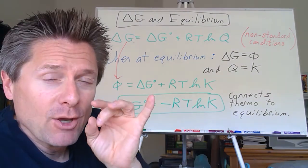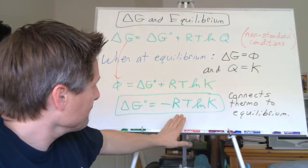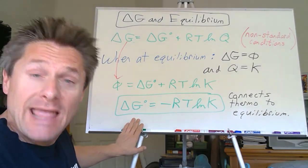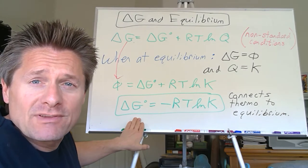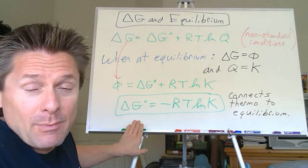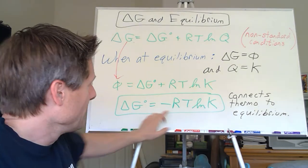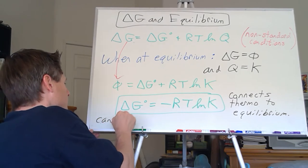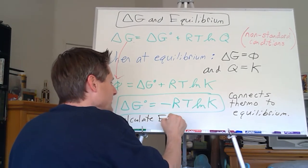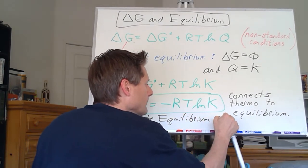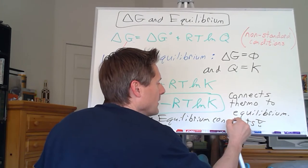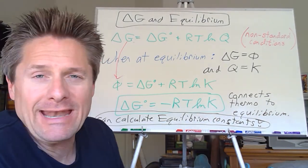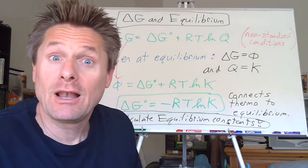One of the most common things for this type of problem is to calculate equilibrium constant values theoretically from thermodynamic tables. We can calculate those whether it's at 25°C — which is easy — or at other temperatures, which is doable but more complex. As long as we have a specified temperature and R, we can calculate K. That's one of the focuses of this video: taking thermodynamic data from tables and calculating equilibrium constants.